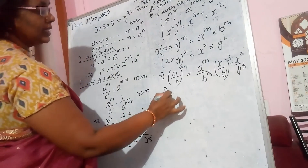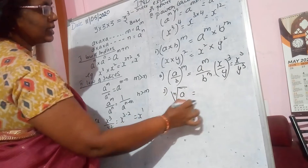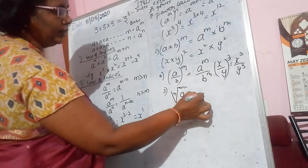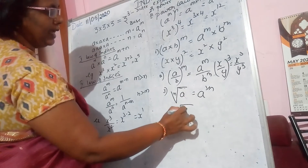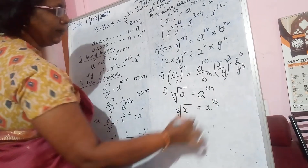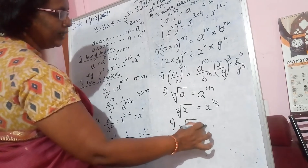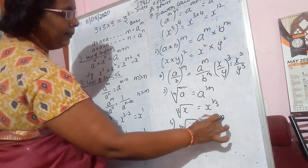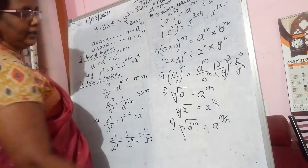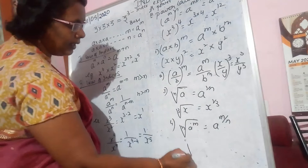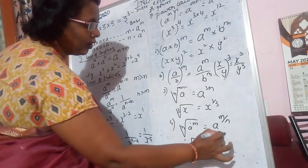Third: whenever there is an nth root of a, this becomes a fraction in index form — a raised to the power of 1 by n. For example, the cube root of x becomes x to the power of 1 by 3. Fourth: the nth root of a raised to the power of m equals a raised to the power of m by n. For example, the 4th root of x to the power of 5 equals x to the power of 5 by 4.